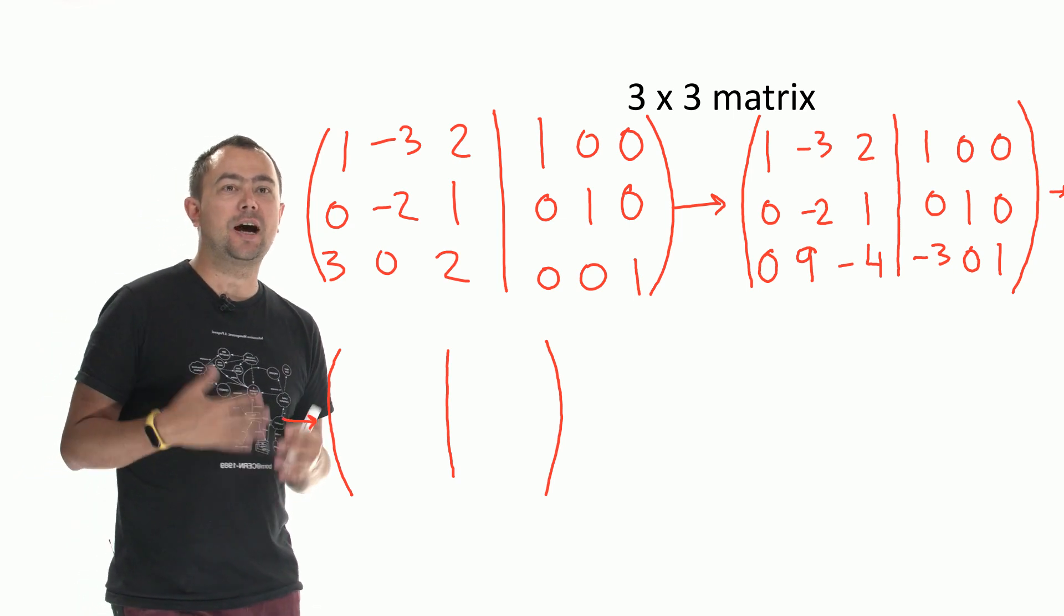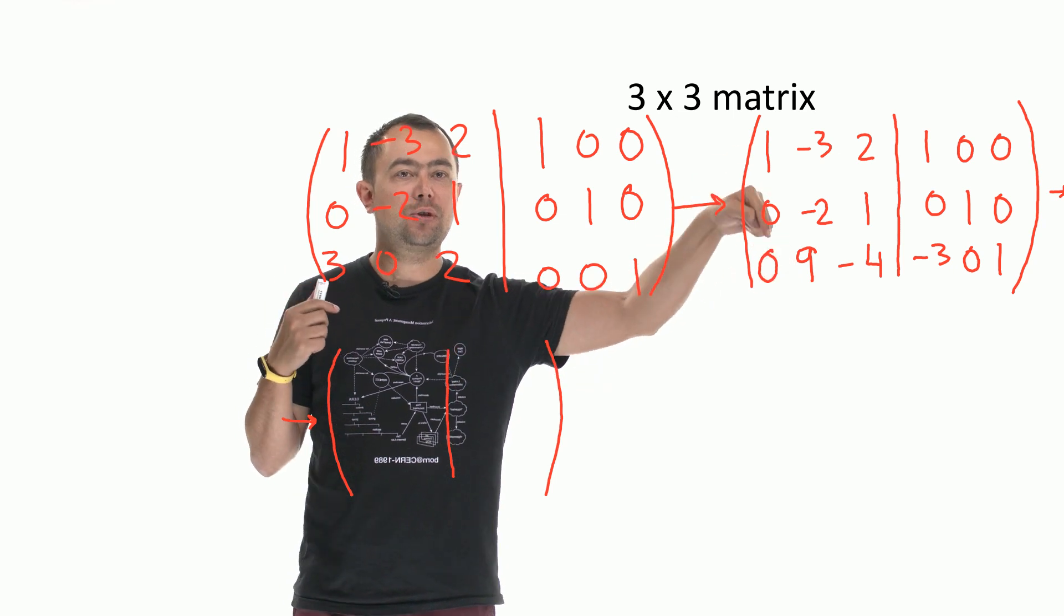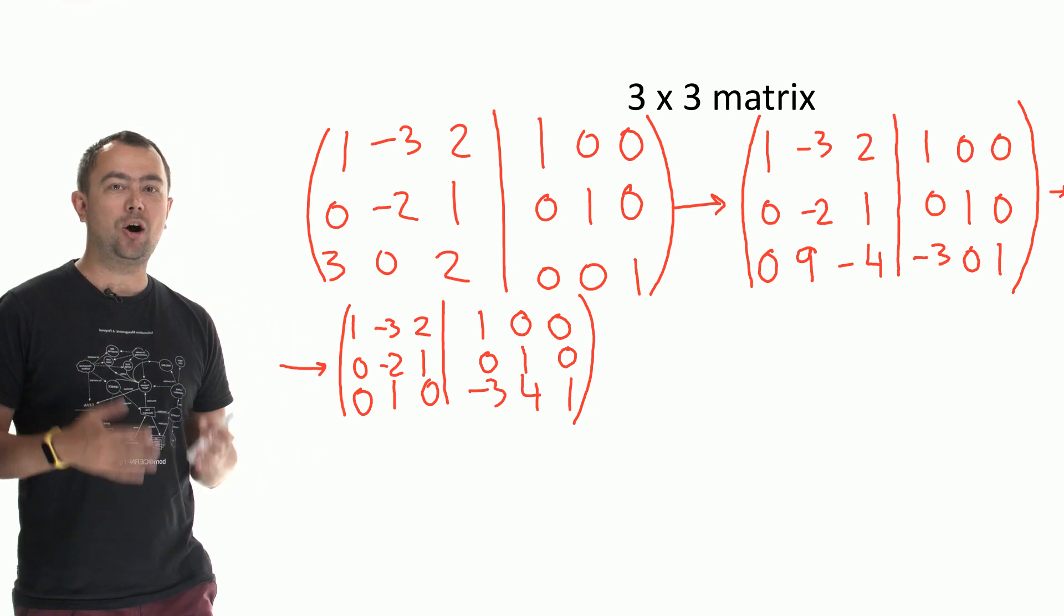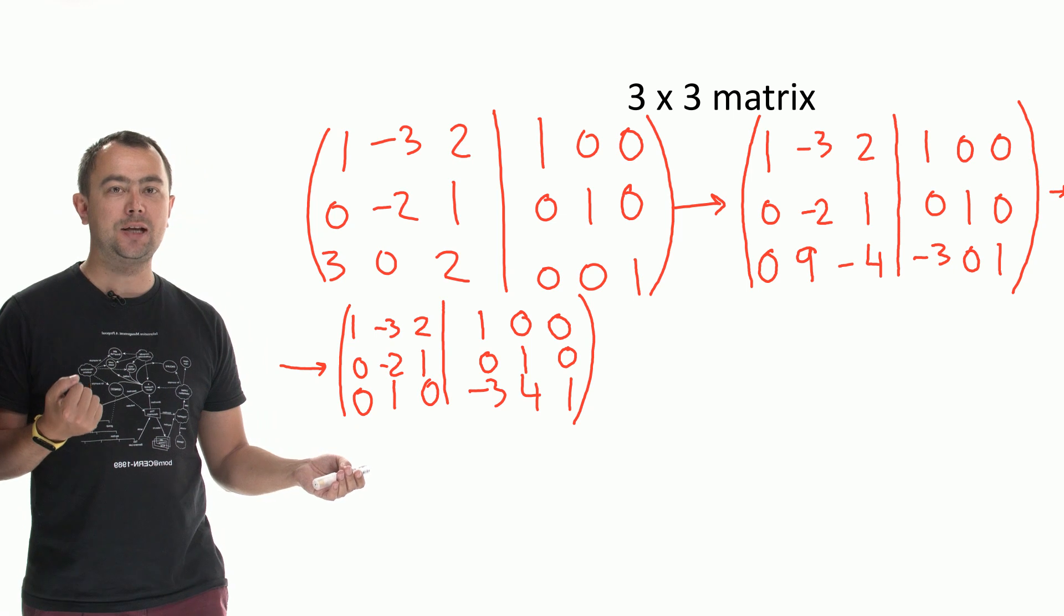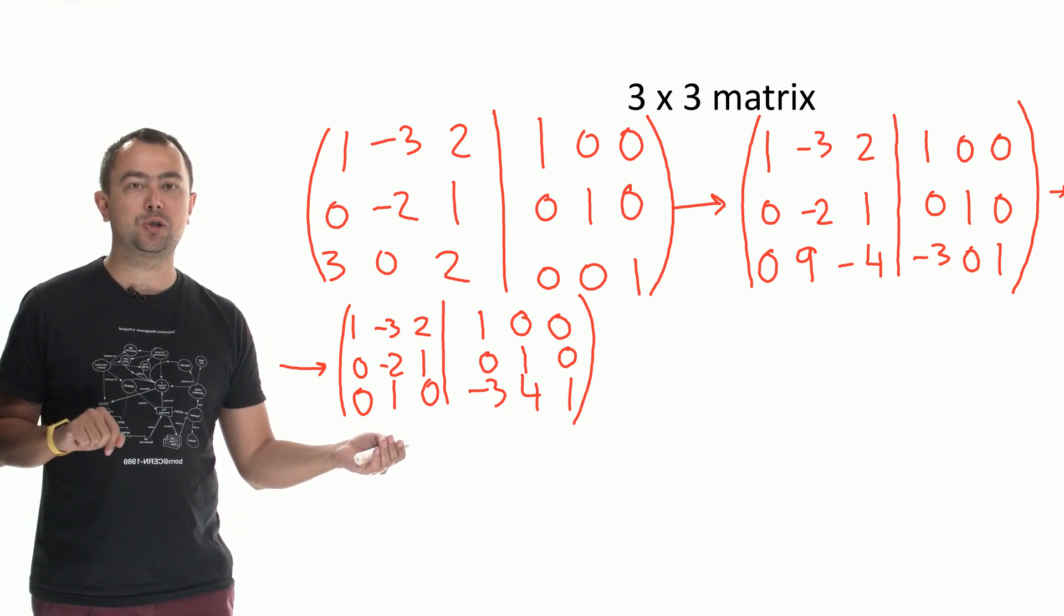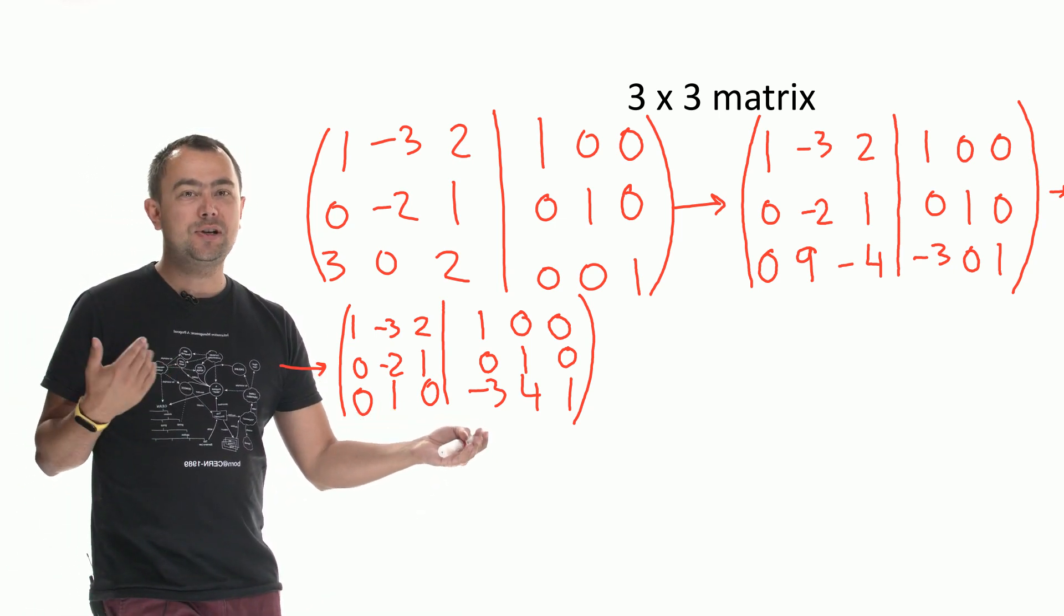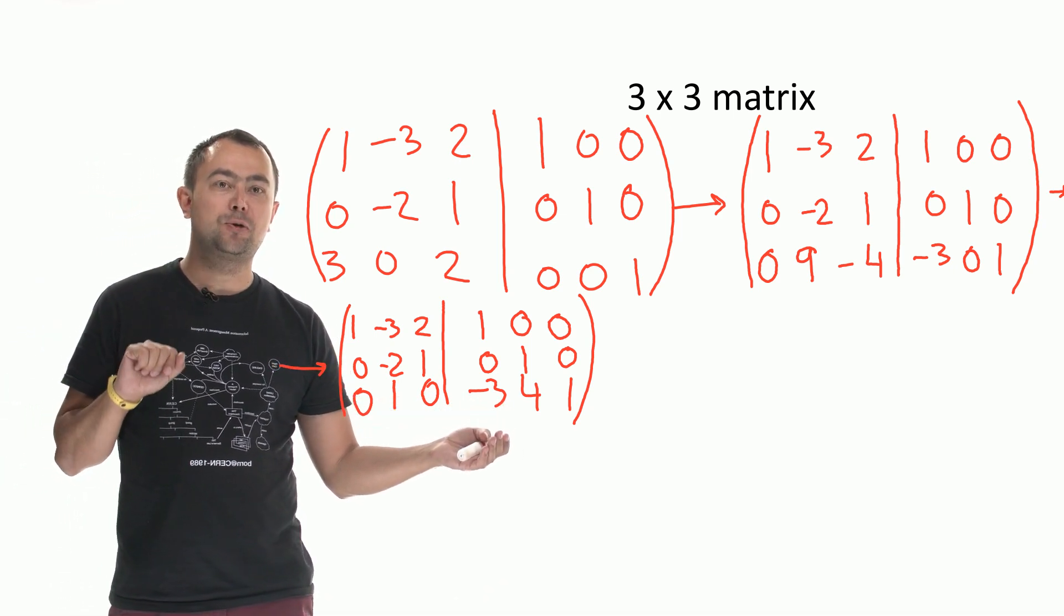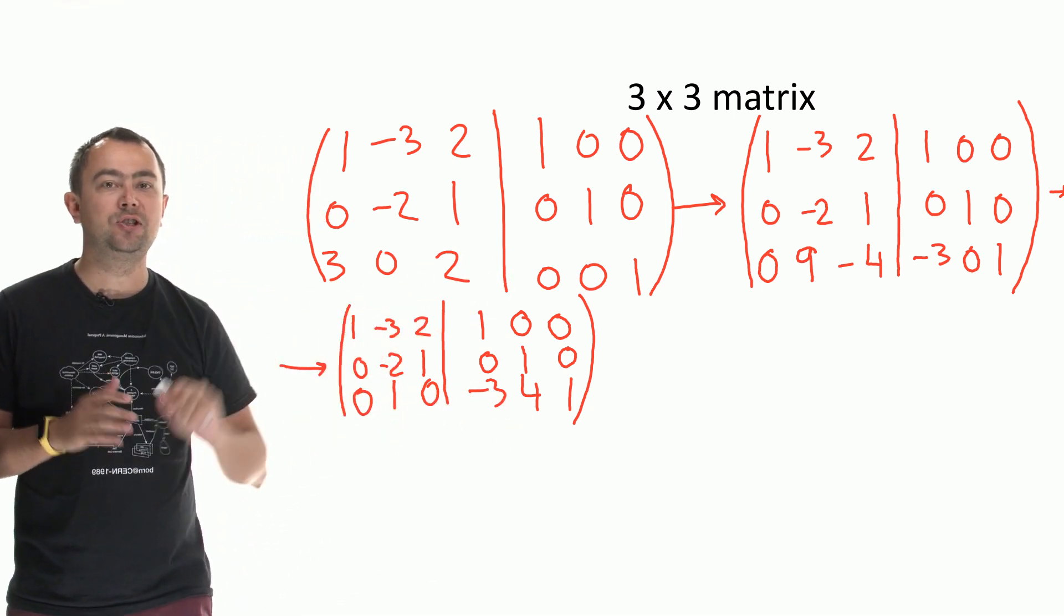The next thing I want to do is I want to add the second row to the third row 4 times. And this is what we get on the last row. So 0 plus 4 times 0 is 0. 9 plus 4 times minus 2 is 1. Minus 4 plus 4 times 1 is 0. Minus 3 plus 4 times 0 is minus 3. 0 plus 4 times 1 is 4. And 1 plus 4 times 0 is 1. The first two rows have not changed.